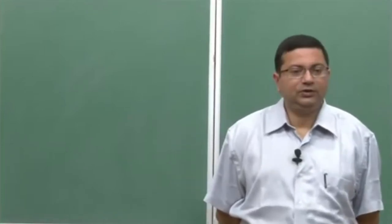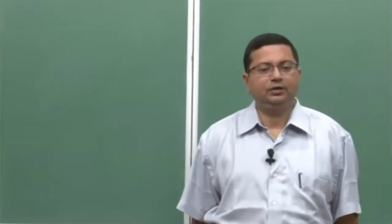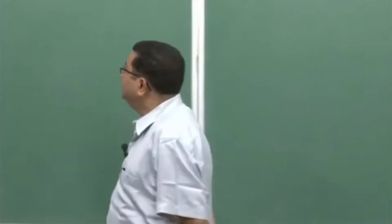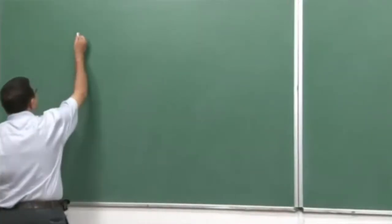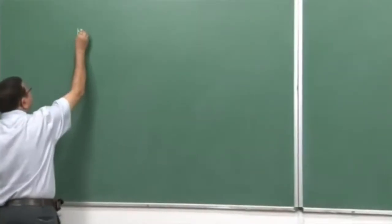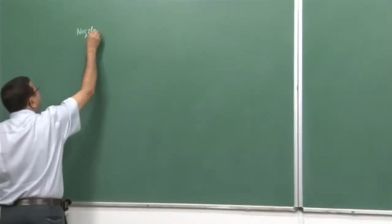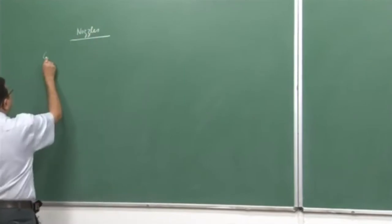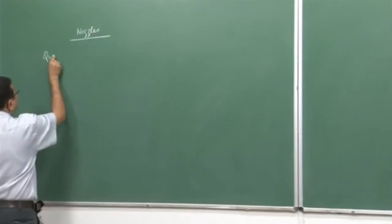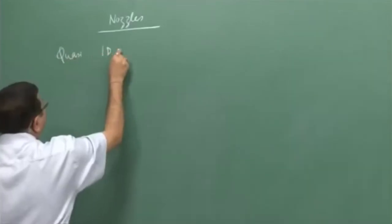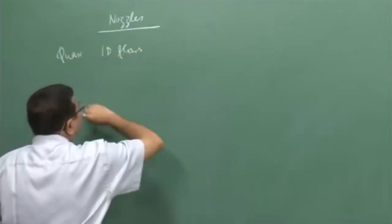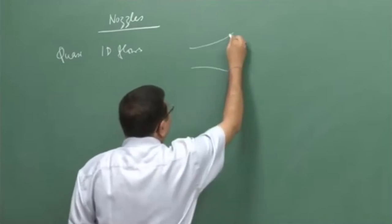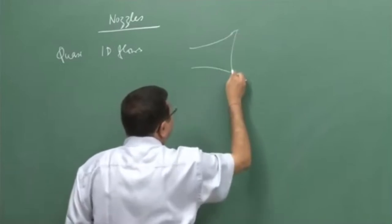Welcome to this lecture on rocket propulsion. In the last class, we had started discussing nozzles. We are discussing quasi 1-D flows, which are essentially flow through variable area ducts.